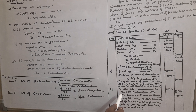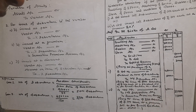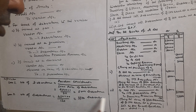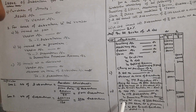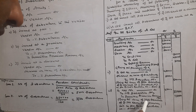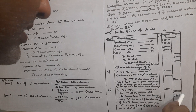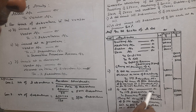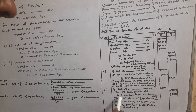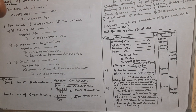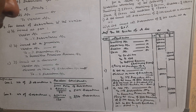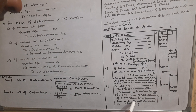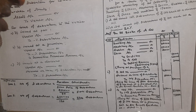The journal entry for Case 2: B Limited Account debit 4 lakh 50 thousand, to 10 Percent Debenture Account — 3750 into 100 equals 3 lakh 75 thousand, to Securities Premium Reserve Account — 3750 into 20 equals 75 thousand. So: B Limited debit 4 lakh 50, to 10 Percent Debenture Account 3 lakh 75, to Securities Premium Reserve Account 75 thousand. Narration: Being issue of 3750 debentures of rupees 100 each at a premium of 20 percent as per board resolution.